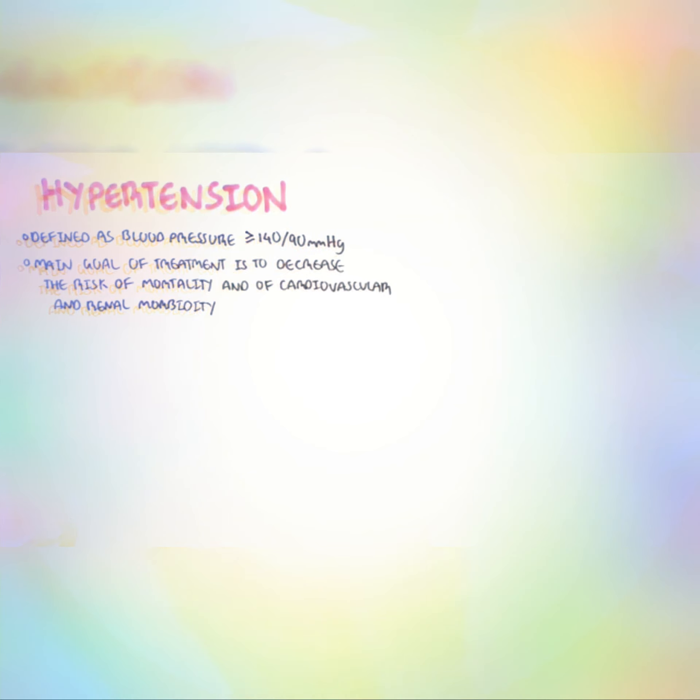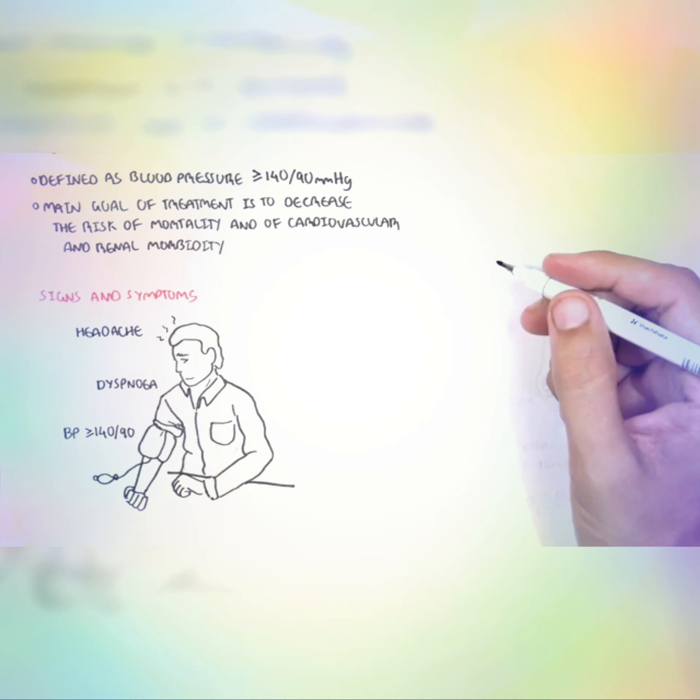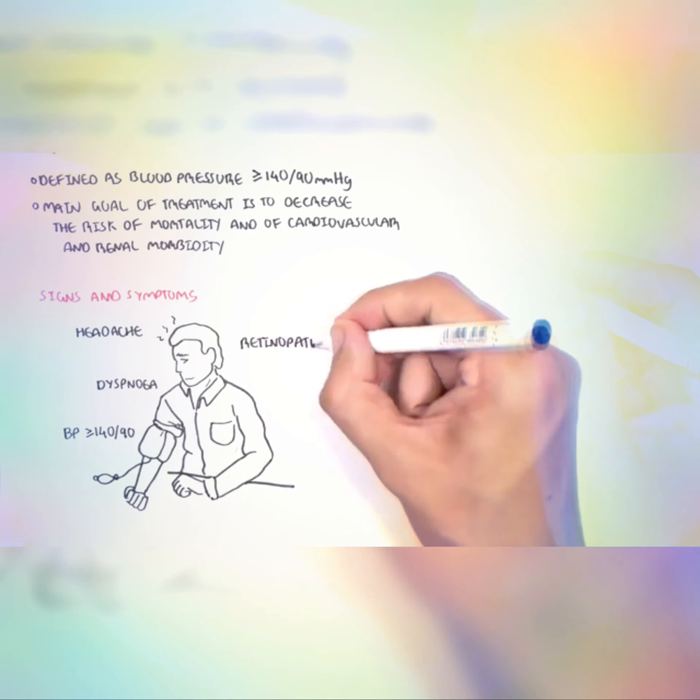Hypertension is defined as blood pressure of 140 over 90 mmHg or greater. The main goal of treatment is to decrease the risk of mortality and of cardiovascular and renal morbidity.